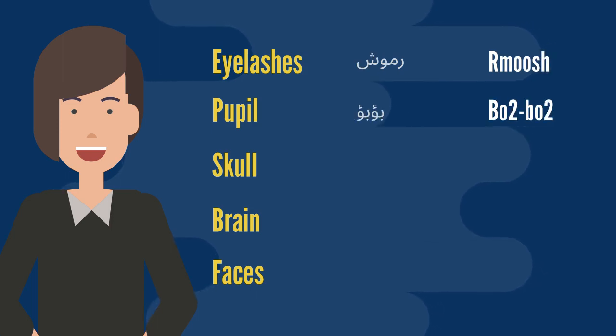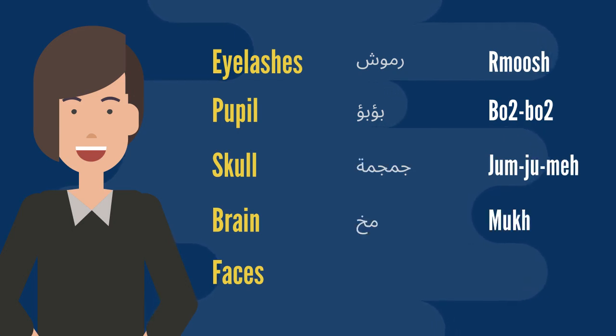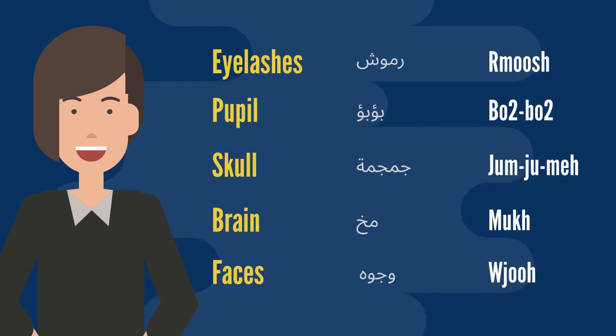Pupil — būbū. Skull — jumjum. Brain — mūkh.